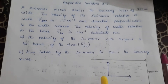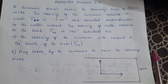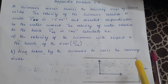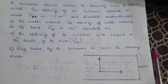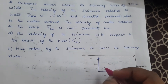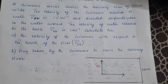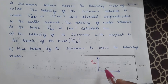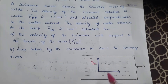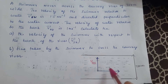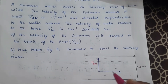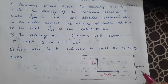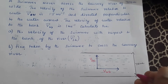We imagine this is the river, which is 750 meters wide. The velocity of the swimmer relative to water — V_SW — is 1.5 meters per second, directed perpendicular to the water current. Water current is in this direction, and the swimmer is perpendicular to that. The velocity of water relative to the bank — V_WB — is 1 meter per second.